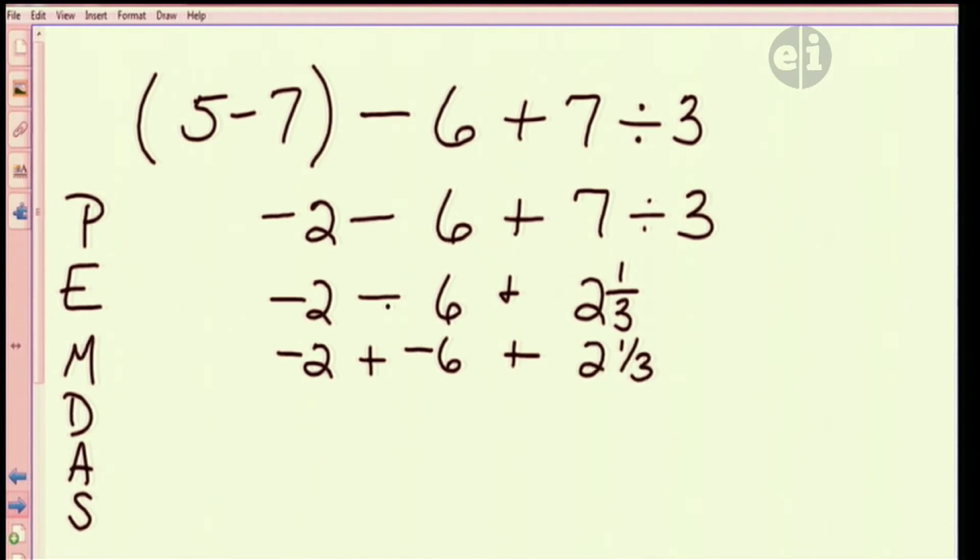Now add your negatives. You get negative 8 because the same sign sum. And now you have 2 and 1/3. Since these two are different signs, we have to actually subtract.